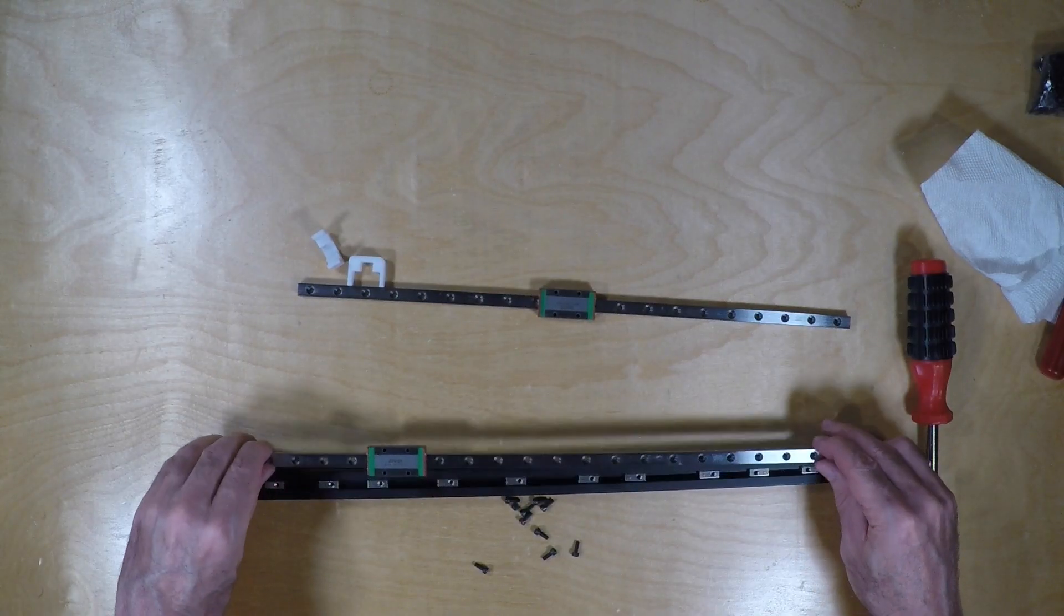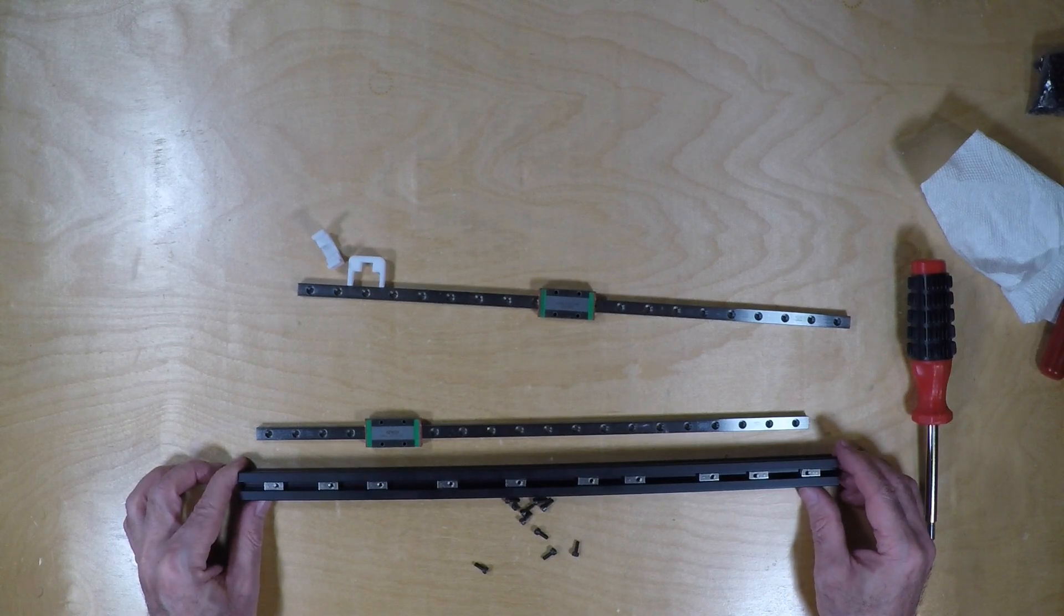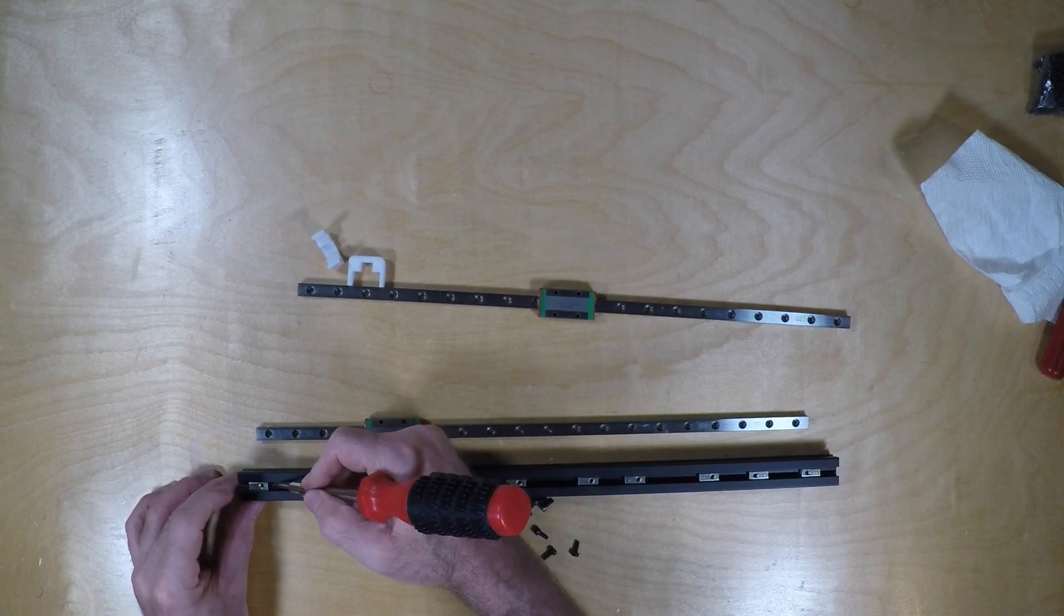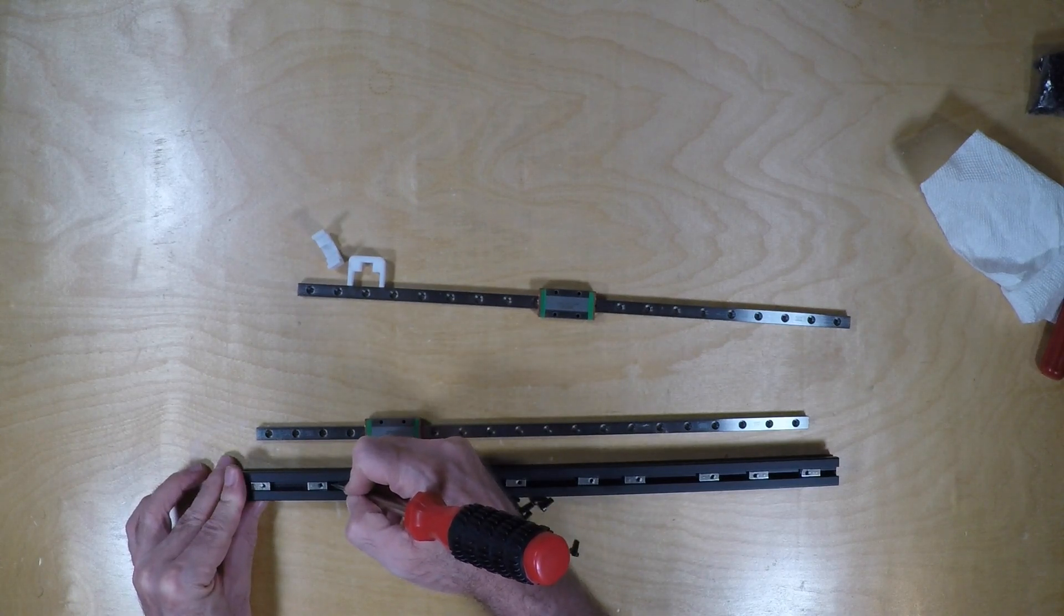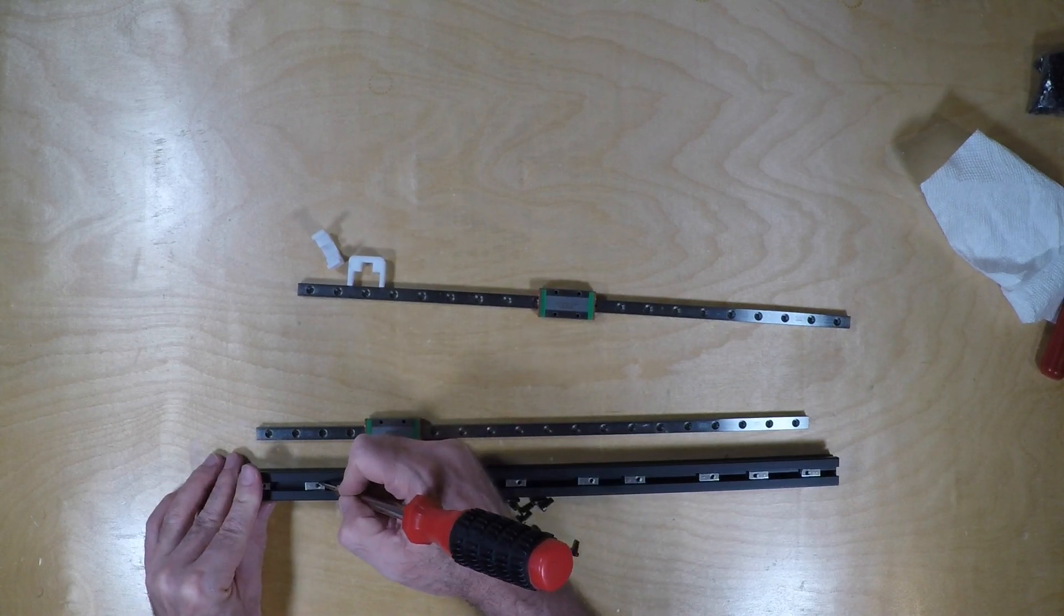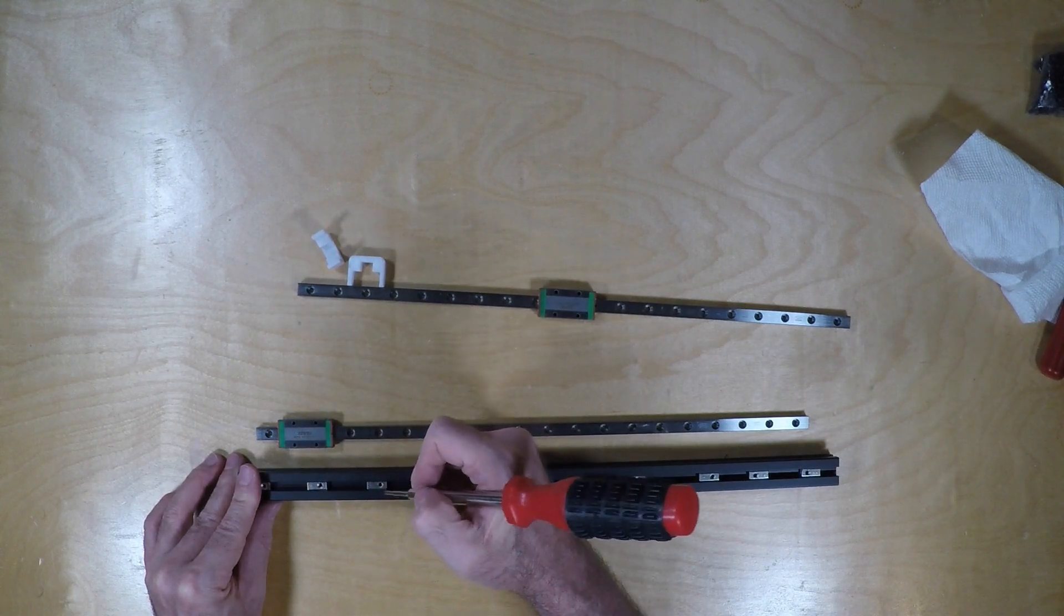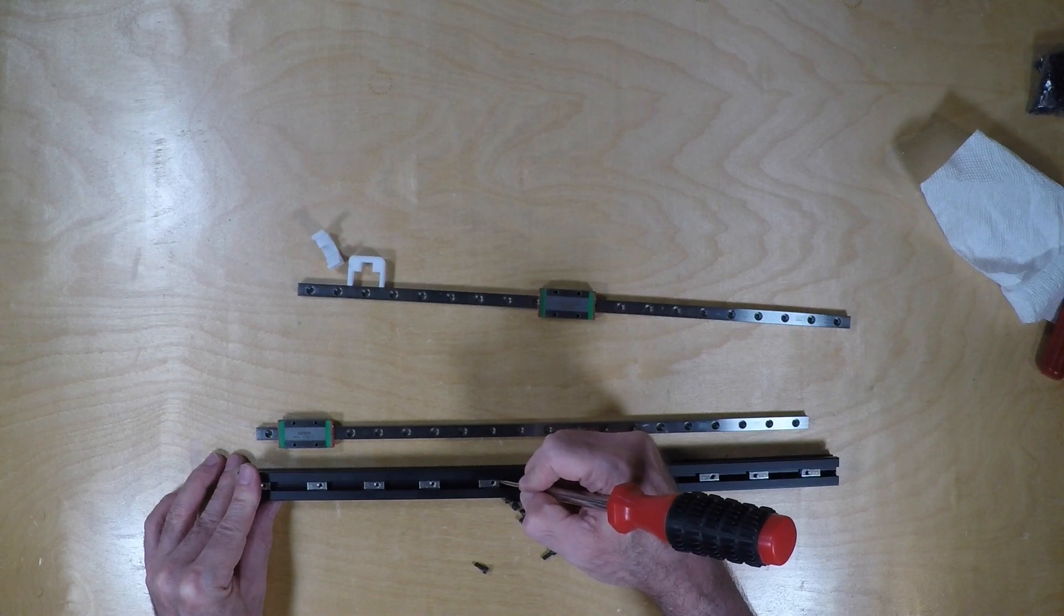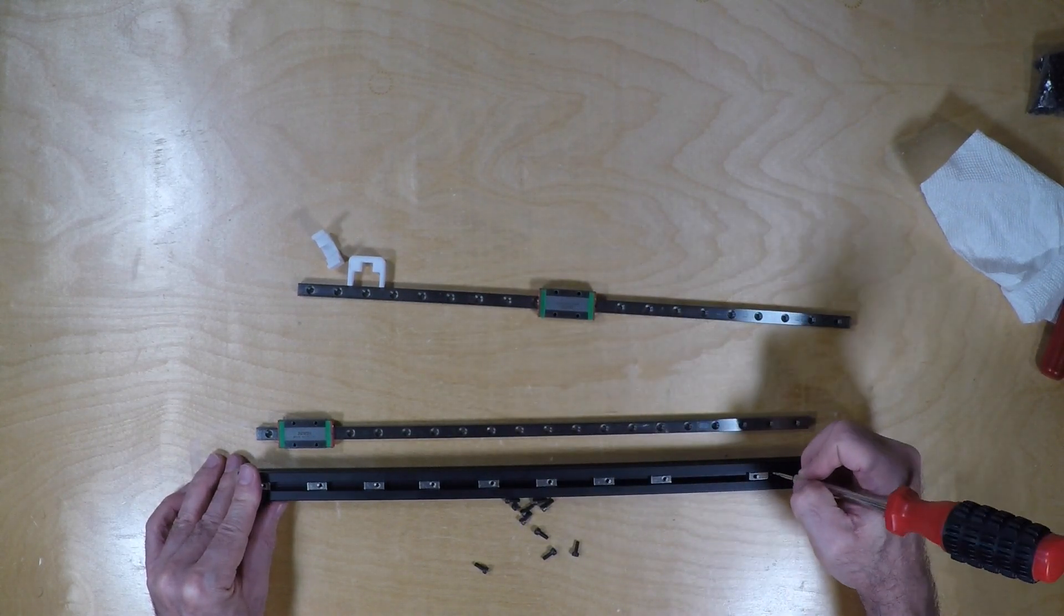Here I've placed the nuts in the extrusion so I can line the holes up in the rail with the nuts. When you assemble yours, make sure these nuts on each end of the extrusion are actually turned in the opposite direction from what I have here, or you'll have to partially disassemble this. I learned the lesson here the hard way.